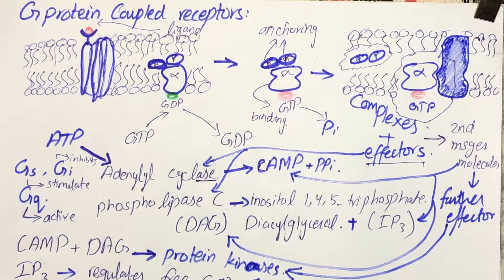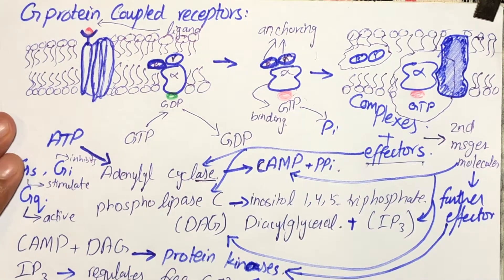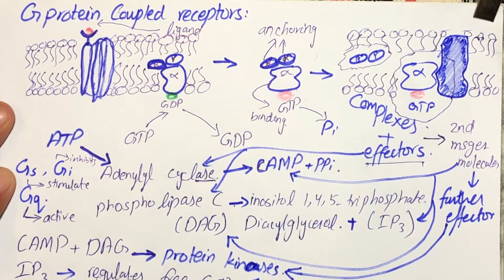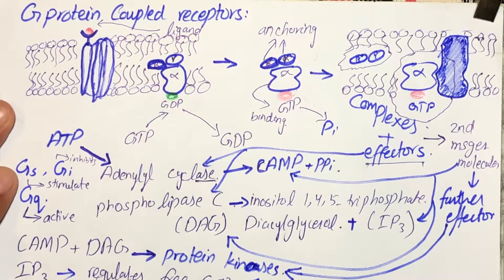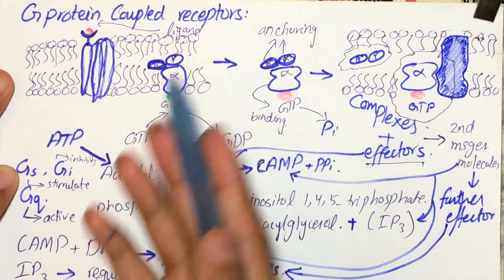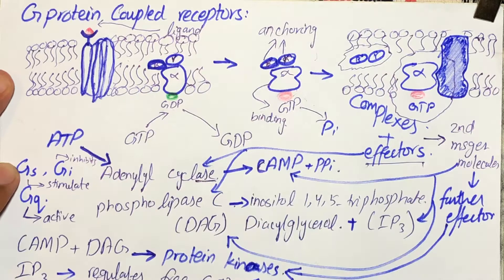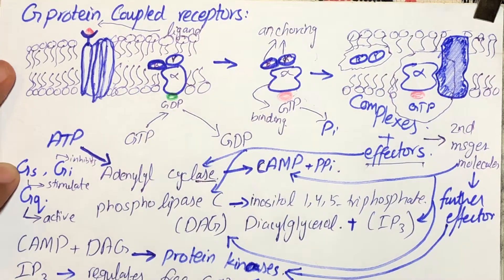It is very important to understand how G protein-coupled receptors work, because when studying further mechanisms of drugs, the basic concept of these receptors should be clear.